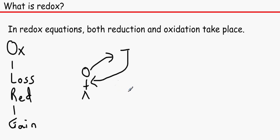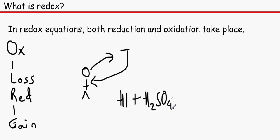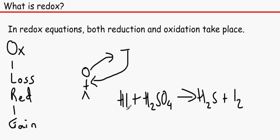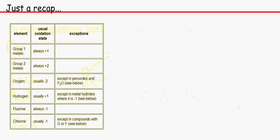Let's say for example we have HI + H2SO4 → H2S + I2. You might not see it right now but oxidation and reduction is happening in this equation.